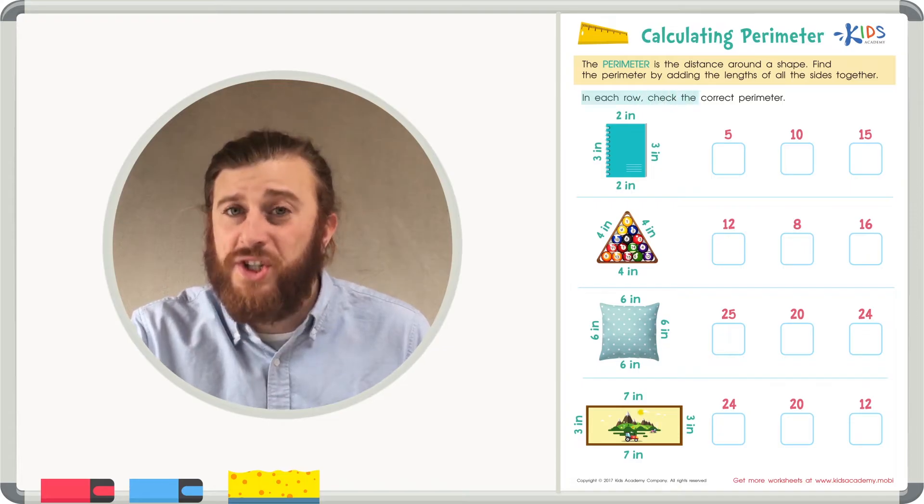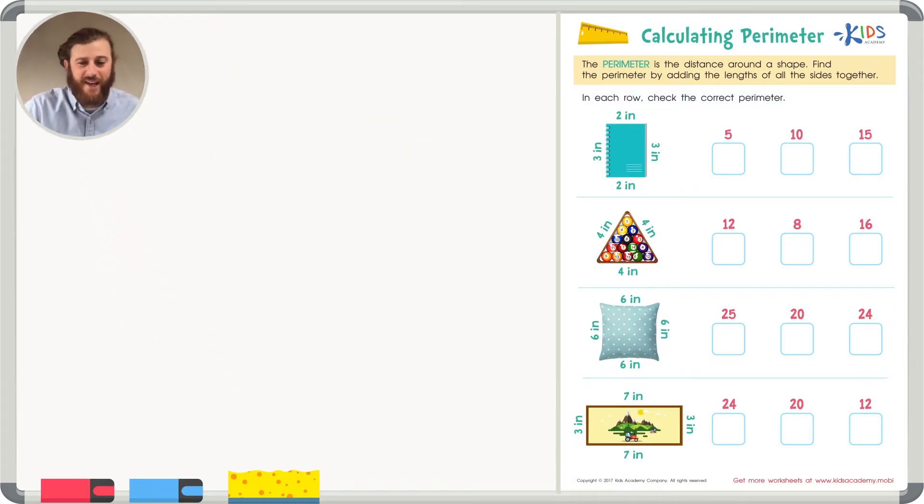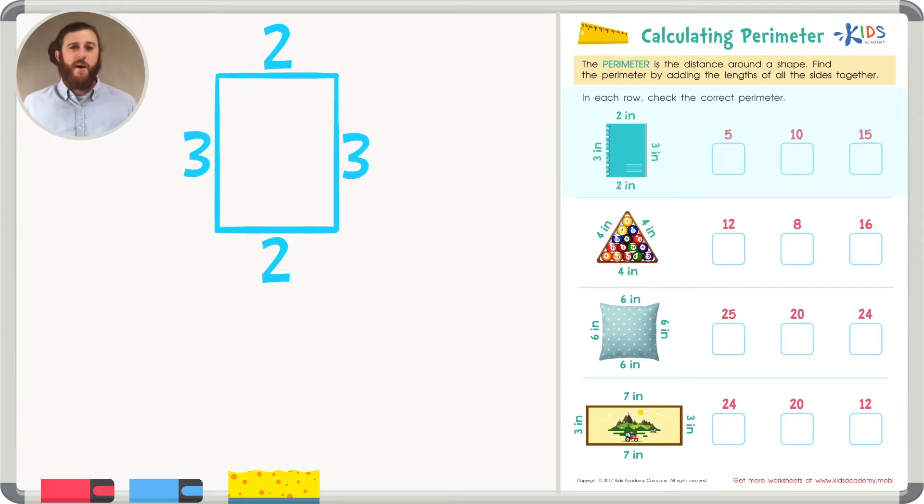In each row, check the correct perimeter. Okay, remember we're just adding the sides together. In this first example, we have a rectangle with sides of two inches and two inches, and three inches and three inches. My favorite strategy for finding the perimeter of a rectangle is adding the doubles together first. So, let's start by adding two plus two.